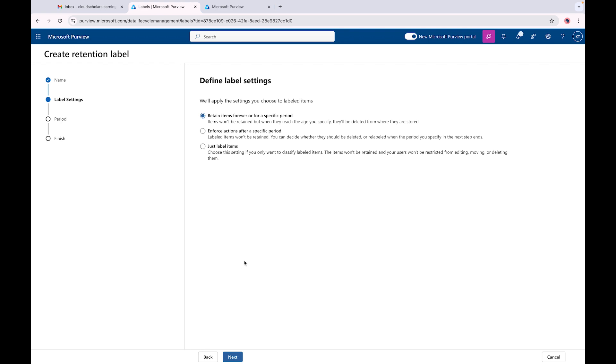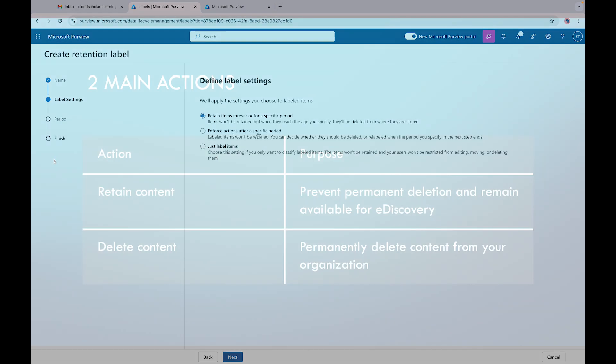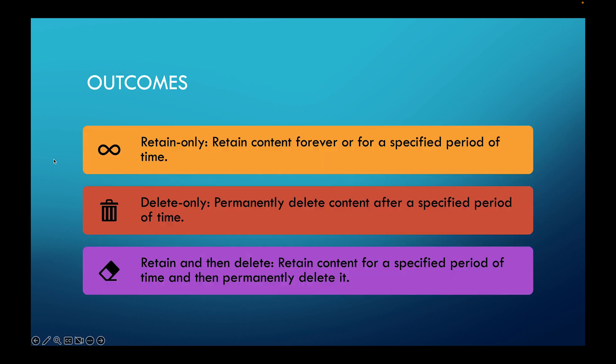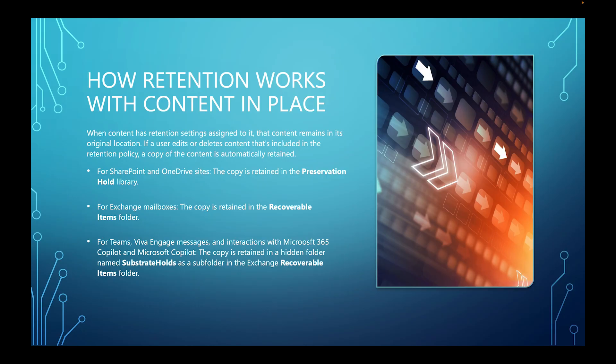Now when it comes to retention labels, I want to quickly go to a PowerPoint slide to go through the options: just retain an item for a specific period of time, enforce actions after a specific period of time, or just label items. The two main actions are: retain content - prevent permanent deletion and keep it available for things like eDiscovery - or delete content, permanently delete it from your organization. Outcomes include retaining content forever, deleting after a specific period, or retaining and then deleting.